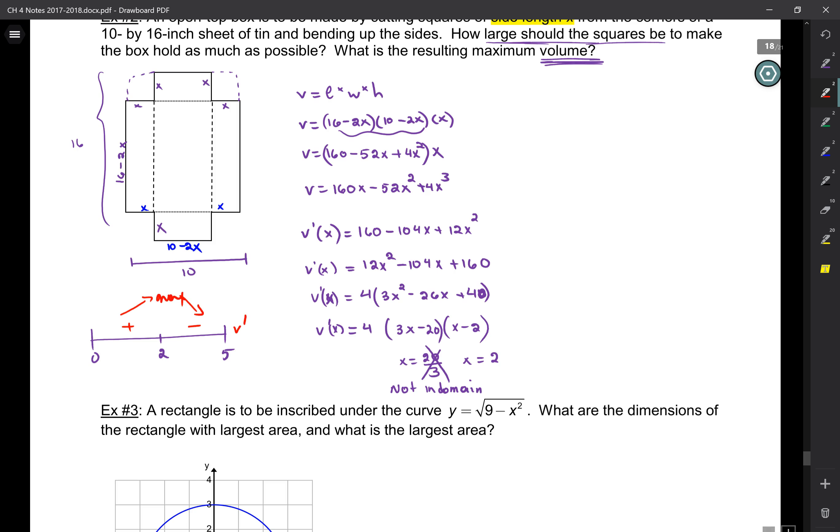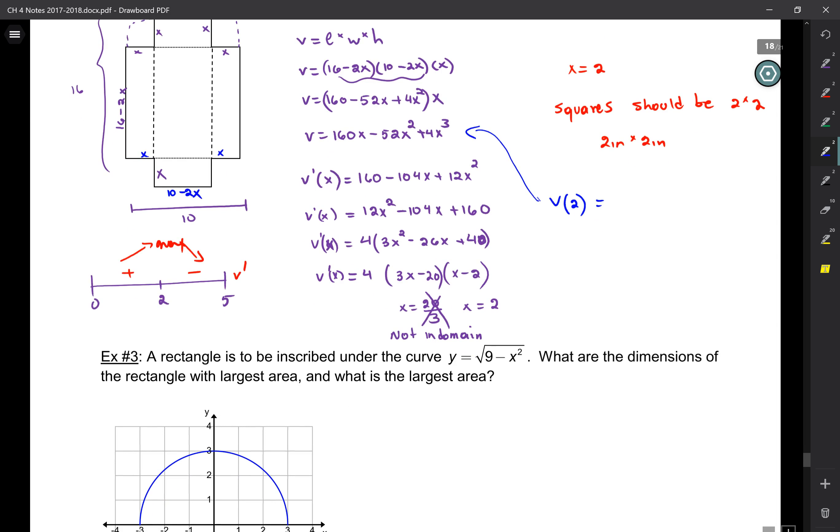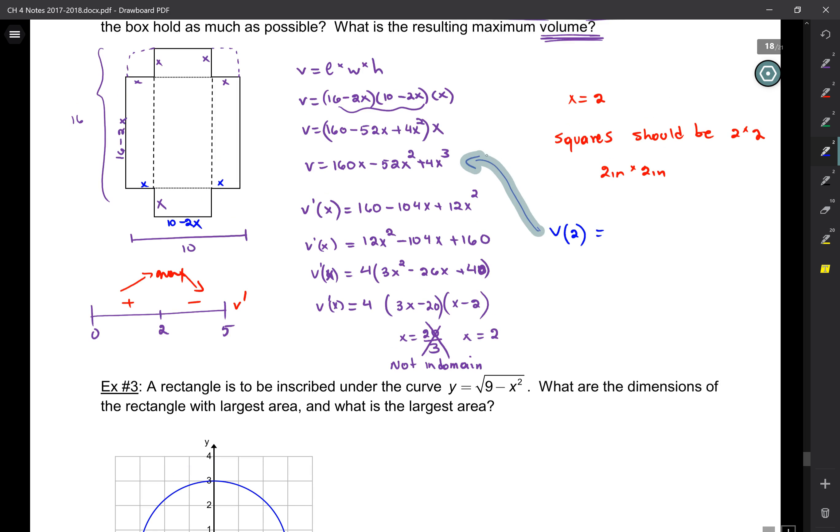Now, what is the resulting maximum volume? What is the volume when x is equal to 2? You plug that into this one. Or, you know what? It's easier to plug it into the original, this one. So, it's going to be 16 minus 4, which is 12. 10 minus 4, which is 6 and 2. 144 inches cubed.